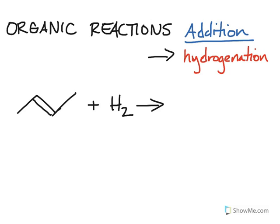So in our example here, we have 2-butene. And what we're going to do is we're going to hydrogenate it, meaning that we're going to add hydrogen to the double bond.